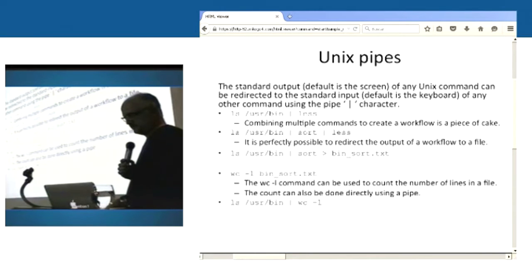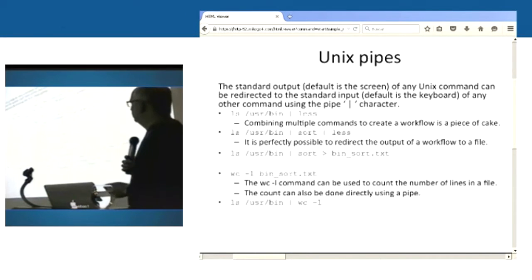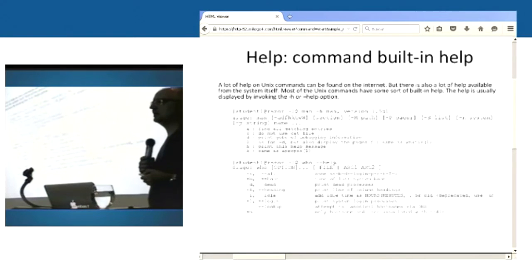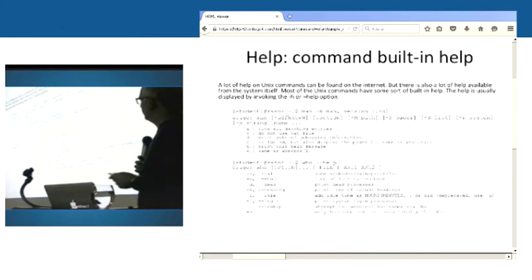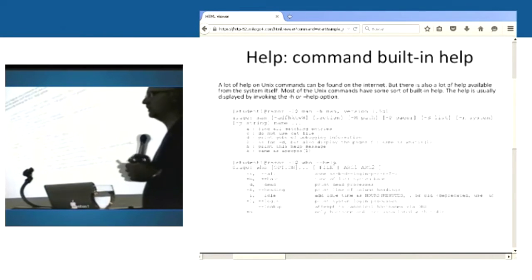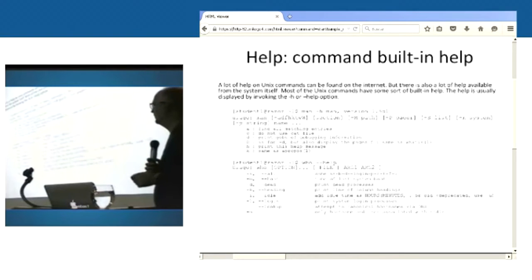One important thing I forgot to mention about redirection: when you use a single greater-than sign, it will redirect output to a file. If the file already existed, it will be overwritten — Unix is not forgiving. If you use two greater-than signs, it will be appended, meaning the file will not be overwritten but added to. This is a very important distinction. If you want to add to an existing file, use the double greater-than; if you use a single one, the previous content will disappear.